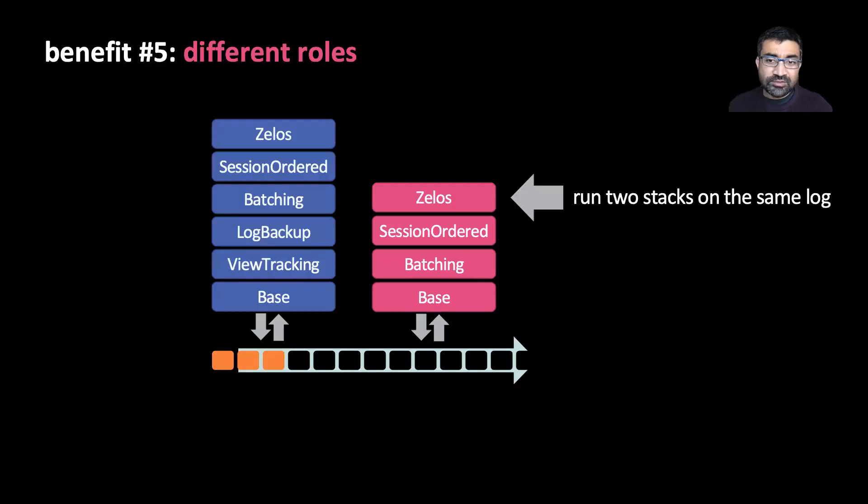Finally, we used log structure protocols to enable features in Zelos, such as passive observer nodes. These are nodes that observe the log and materialize the database, but do not count as first-class durable copies. We were able to easily and safely deploy such nodes just by running a stripped-down subset of the stack.